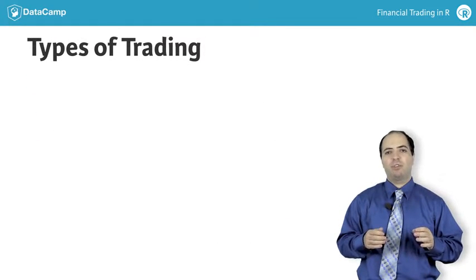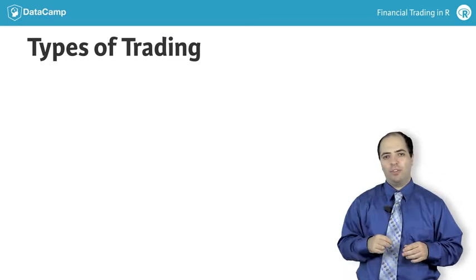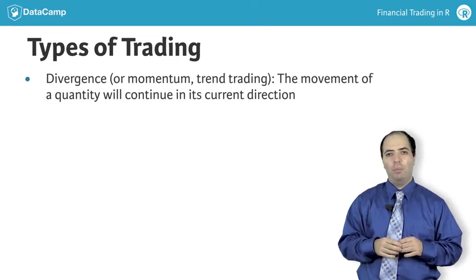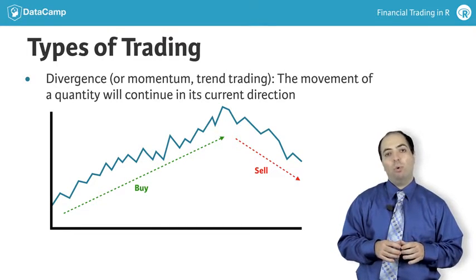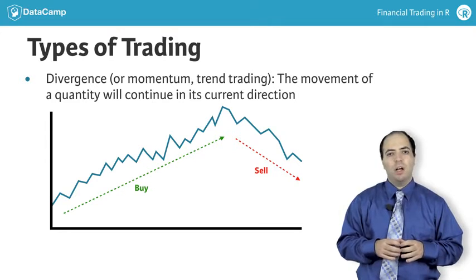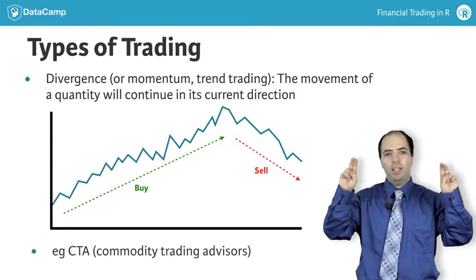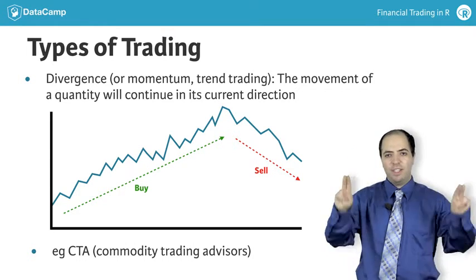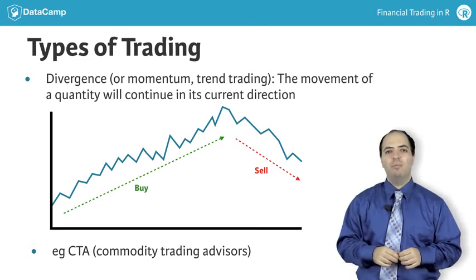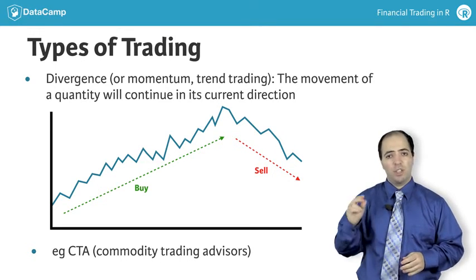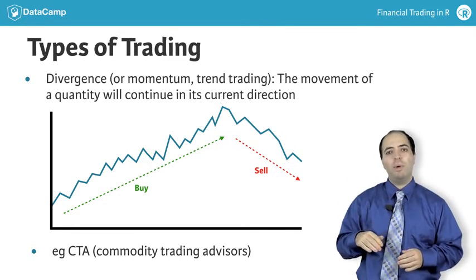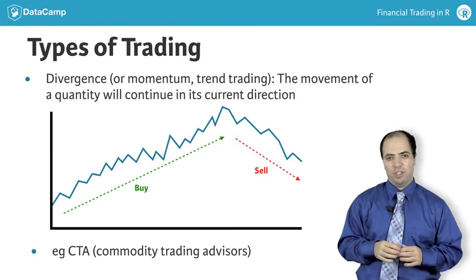In terms of the mechanics of trading, there are essentially two types of trades. Divergence, also called momentum or trend trading, is the belief that a quantity will continue to increase or decrease if it has already been increasing or decreasing, respectively. A class of hedge funds known as Commodity Trading Advisors, or CTAs, have made a lot of money on proper trend-following trading techniques. These classes of strategies are characterized by suffering small losses in trendless markets, while making a great deal of money when a trend establishes.